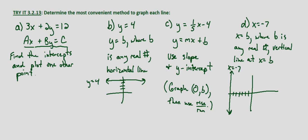So again, most convenient methods: if we have standard form Ax plus By equals C, we'd want to find the intercepts and plot one other point. If we have a vertical or horizontal line, the easiest way is just to recognize it's a vertical or horizontal line at the given value. And if we have it in slope intercept form y equals mx plus b, we'll use the slope and the y-intercept. In other words, we'll graph the y-intercept and then use rise over run to determine another point.